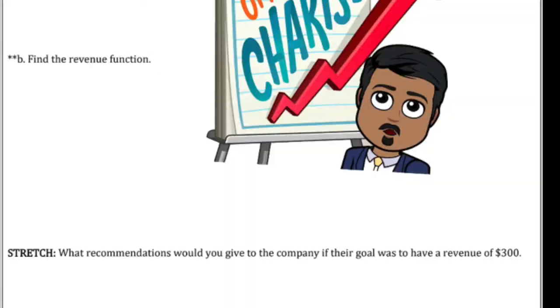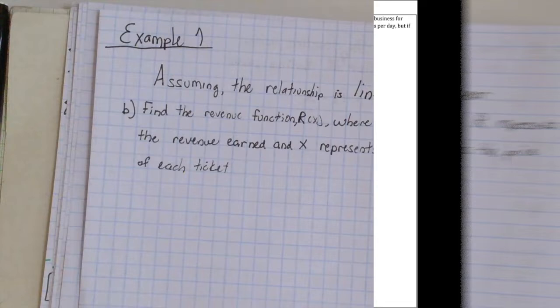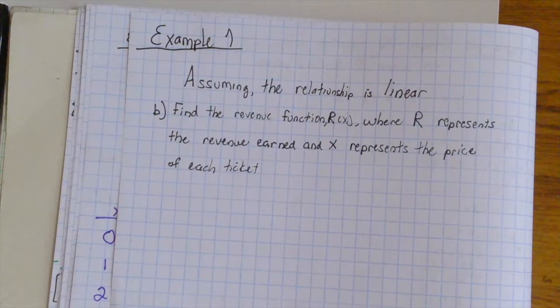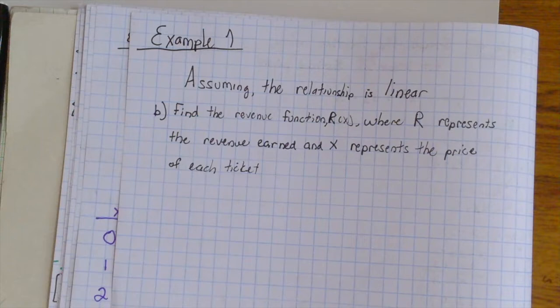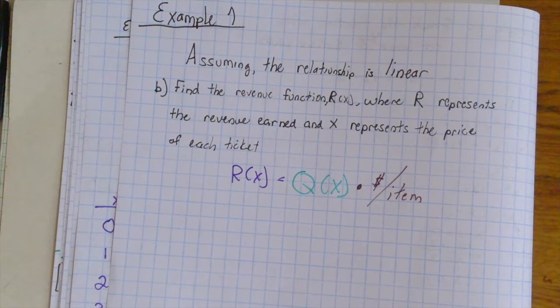Now, let's move on so we can solve for the revenue function of the given scenario. Example 1, part B. Again, assuming the relationship is linear, find the revenue function, R(x), where R represents the revenue earned and x represents the price of each ticket. Now, going back to our equation of revenue, R(x) equals Q(x) times the dollars of price per item, we can now substitute for the values of which we know. Therefore, we have our revenue function.